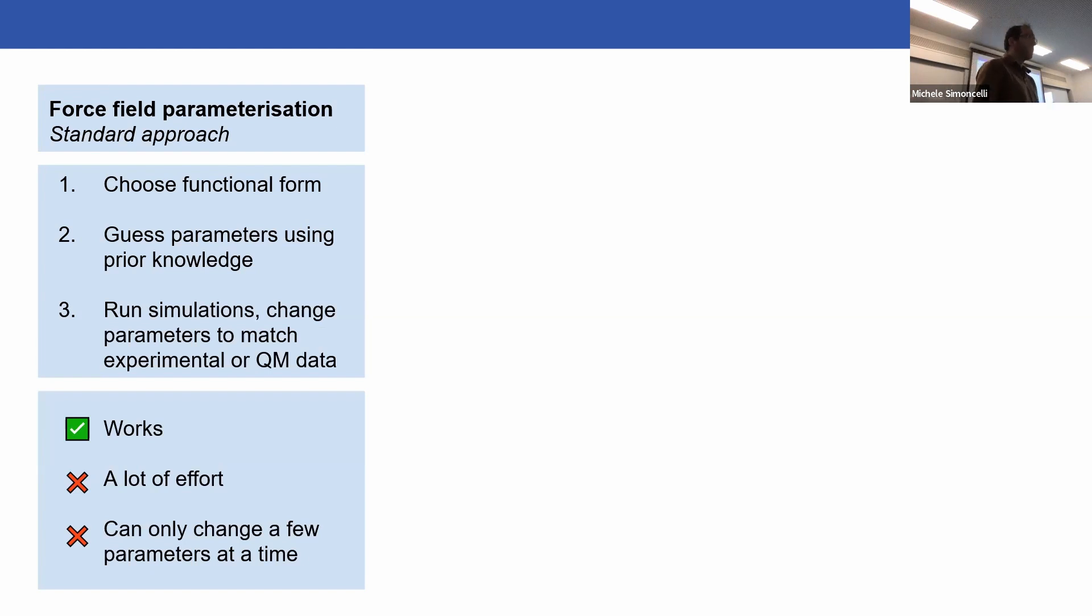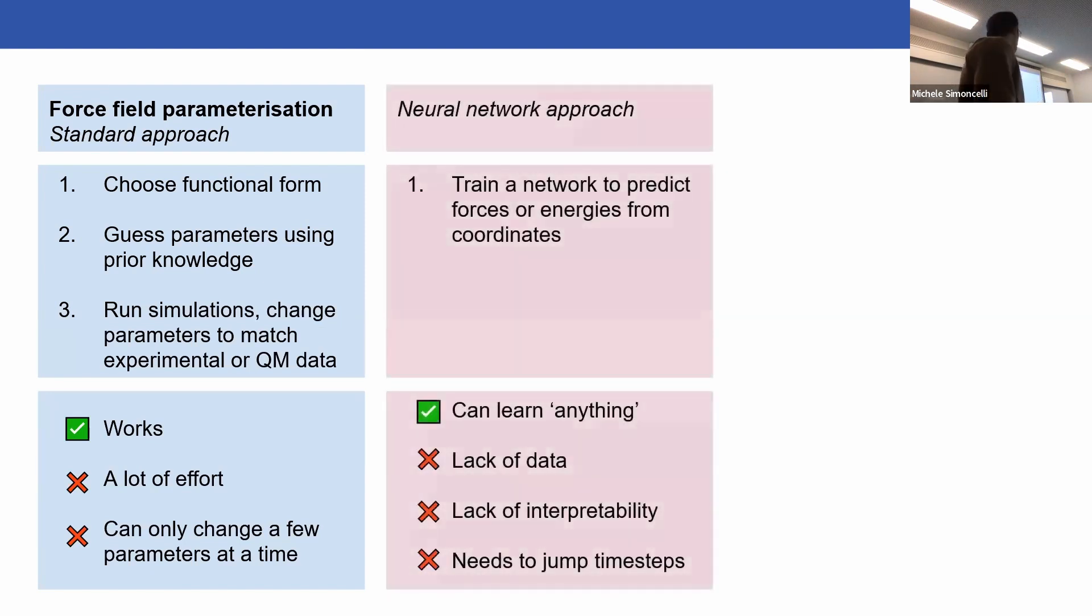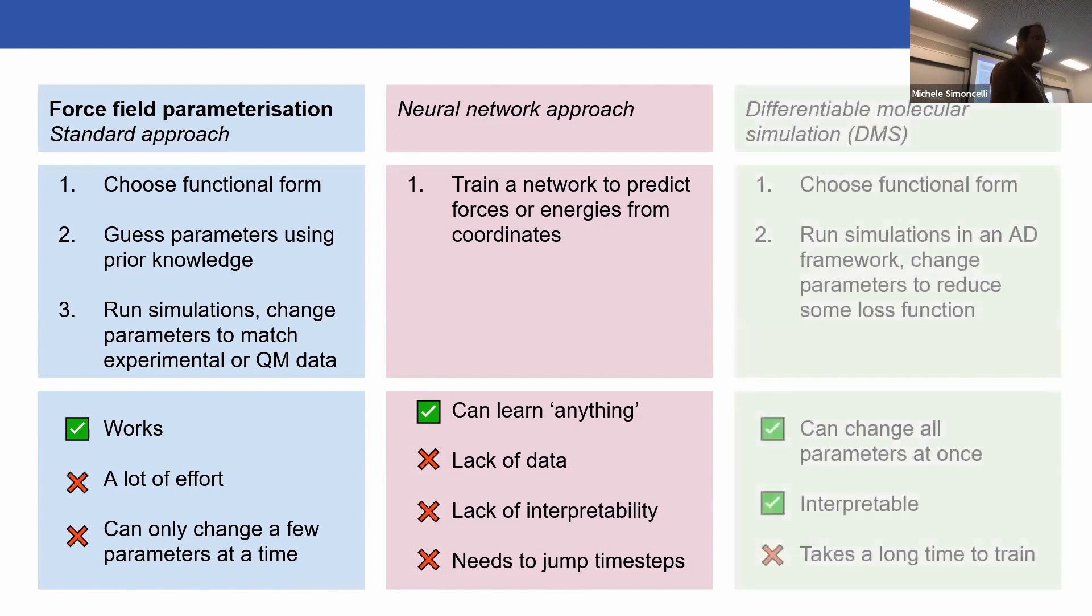This is good because it works - it's how we've got force fields so far. But it's an awful lot of effort and you can only change a few parameters at a time in general. Then there's the modern approach, completely the other way: you train a big neural network to do everything. You train it on trajectory data to reproduce forces, and it takes in coordinates and atom labels. This is nice in that it can learn anything - neural networks are universal approximators. But we struggle with lack of data, the network isn't particularly interpretable, and neural networks actually run slower than molecular mechanics force fields. So you might need to skip time steps, which is questionable whether this is the right way.